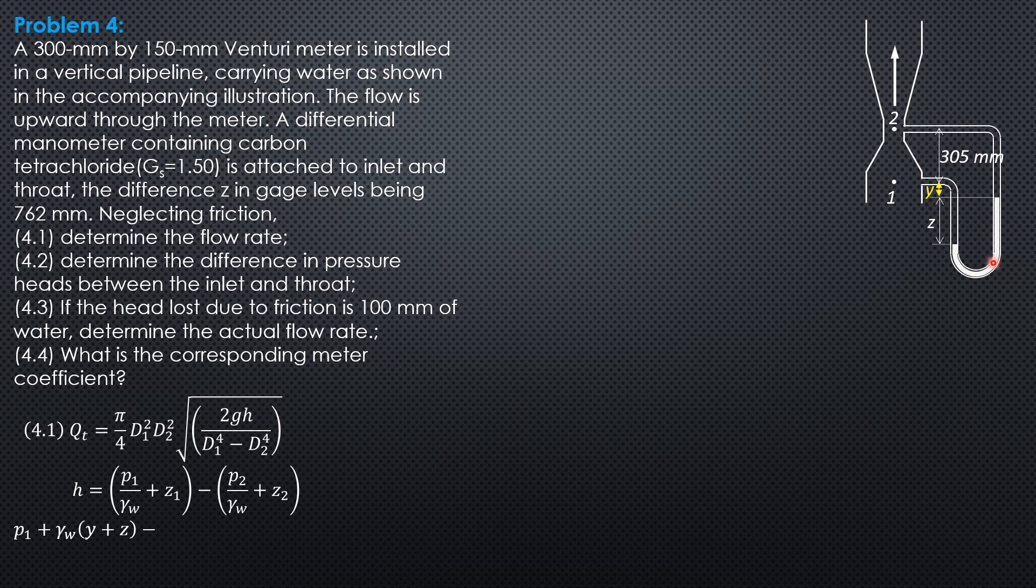Then we rise, so minus. This is carbon tetrachloride, so minus specific weight of carbon tetrachloride times z. Look at the equation there. Then we rise again by y plus 0.305 and this is water, so minus gamma specific weight of water times quantity y plus 0.305 and we reach this point here at the same level as 2. So that's why we equate it to pressure at 2.